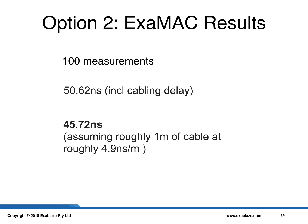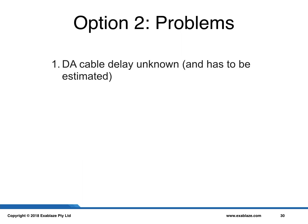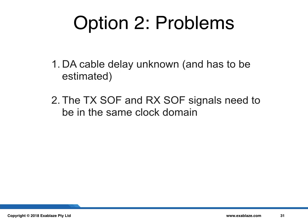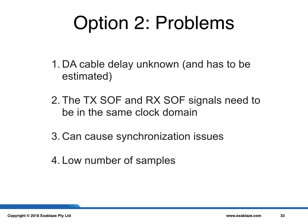There are several problems with this measurement methodology. The first is that the cabling delay is unknown and has to be estimated, which reduces measurement quality. The second is that the transmit and receive start-of-frame signals need to be crossed into the same clock domain and accounted for. Also, looping back a device onto itself can cause synchronization issues in highly optimized devices — these can be avoided, but this adds an extra latency penalty. Finally, this measurement suffers from a very low number of samples.